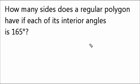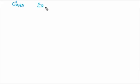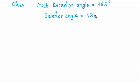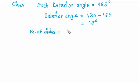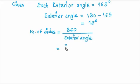Next: how many sides does a regular polygon have if each of its interior angles is 165 degrees? If interior angle is 165 degrees, then the exterior angle is equal to 180 minus interior angle, which is 165, giving 15 degrees — because interior and exterior angles form a linear pair. So, number of sides equals 360 divided by 15, which is equal to 40. The number of sides of this polygon is 40.